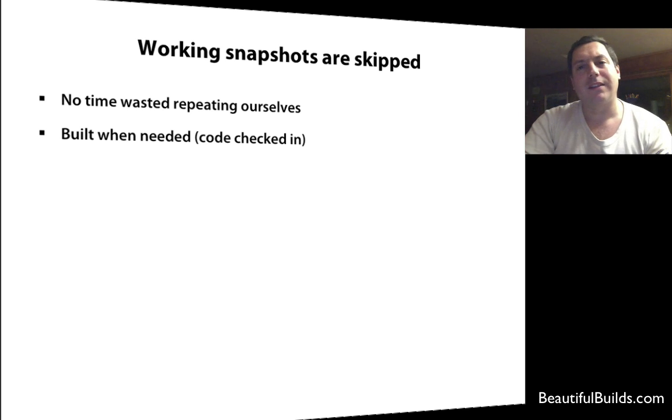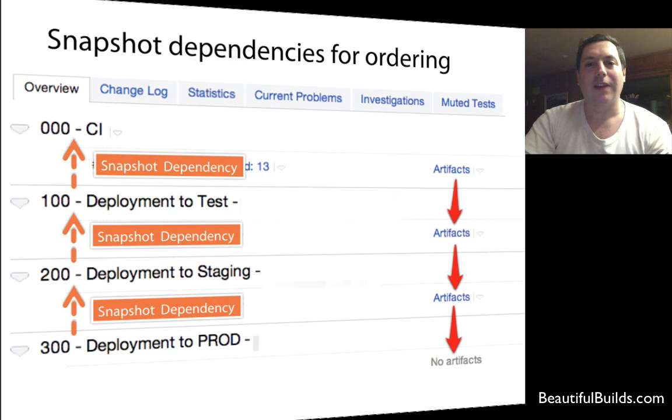So, that's about the team. We can also use snapshot dependencies based on the structure that I showed you in previous videos. In this case, if you remember, we had CI and deploy the test, deploy the staging. I can use a snapshot dependency. I can set a snapshot dependency from prod to staging, and between staging to test, and between test to CI.